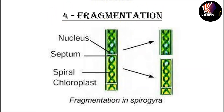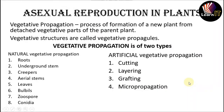The last topic from asexual reproduction in animals is fragmentation. It is a mode of asexual reproduction in which the parent body breaks into distinct pieces, each of which regenerates into an offspring — as in the case of Spirogyra and fungi.